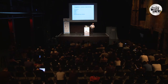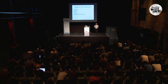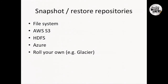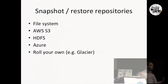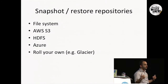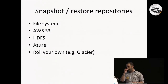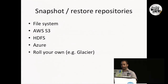Recent versions of Elasticsearch give you the ability to do snapshot and restore to various locations, including the file system and various clouds. All the major cloud implementations are already implemented for you, but you can roll your own. Once you do that, you can basically snapshot and restore from whatever other implementation you wish.